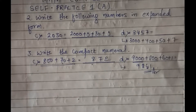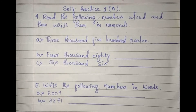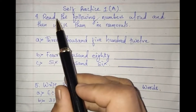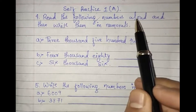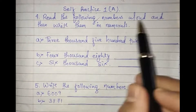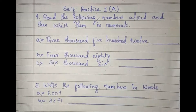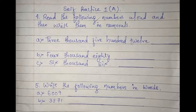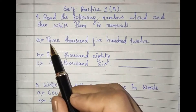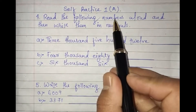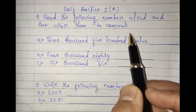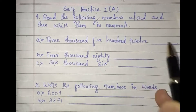With that, we are done with the home assignment. Let us proceed to question number four. The question states: read the following numbers aloud and write them in numeral form. The numbers are given in word form and you have to write them as numerals.